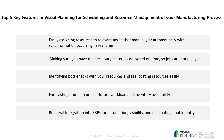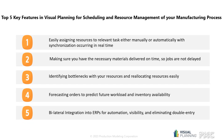Let's go down the list. One: easily assigning resources to a relevant task, either manually or automatically, with synchronization occurring in real time. Two: making sure you have the necessary materials delivered on time so jobs are not delayed. Three: identifying bottlenecks with your resources and reallocating those resources easily. Four: forecasting orders to predict future workload. And five: integration into ERPs for visibility.